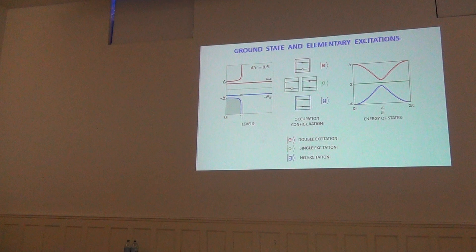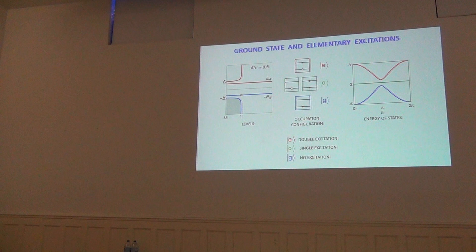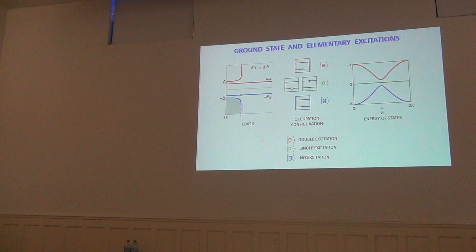To summarize: we have the ground state, the odd state which is the presence of an extra quasiparticle with different parity, and the excited state in which two quasiparticles are created. Going from the ground state to the excited state is equivalent to promoting a Cooper pair — specifically, a Cooper pair occupying the Andreev bound state.